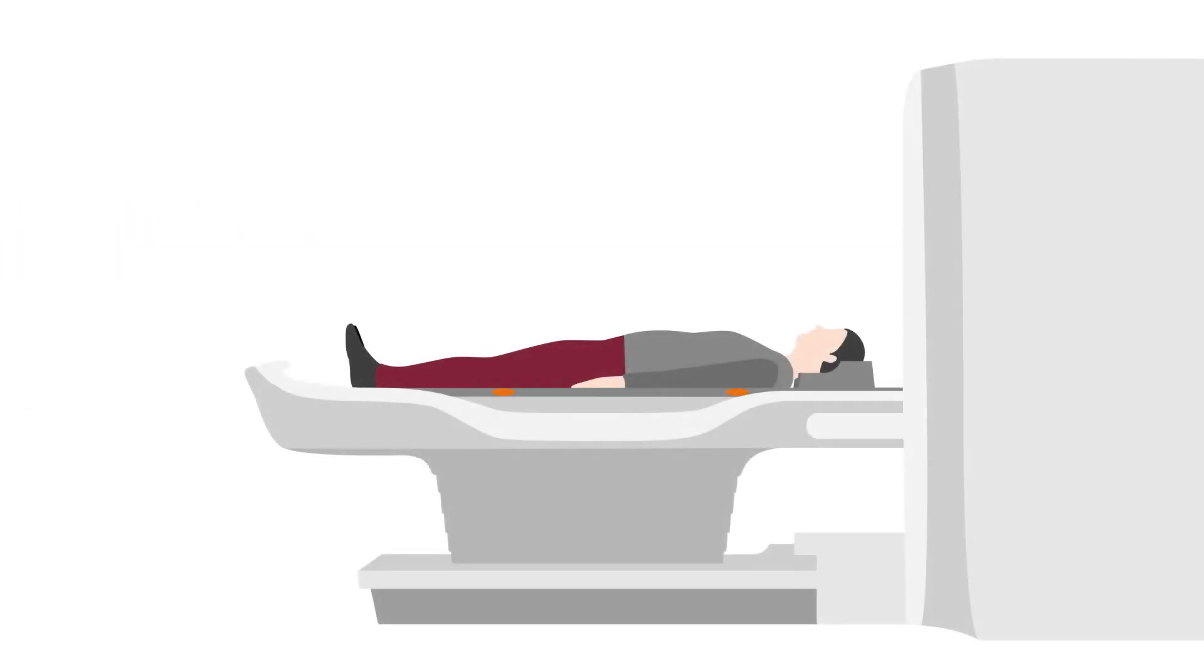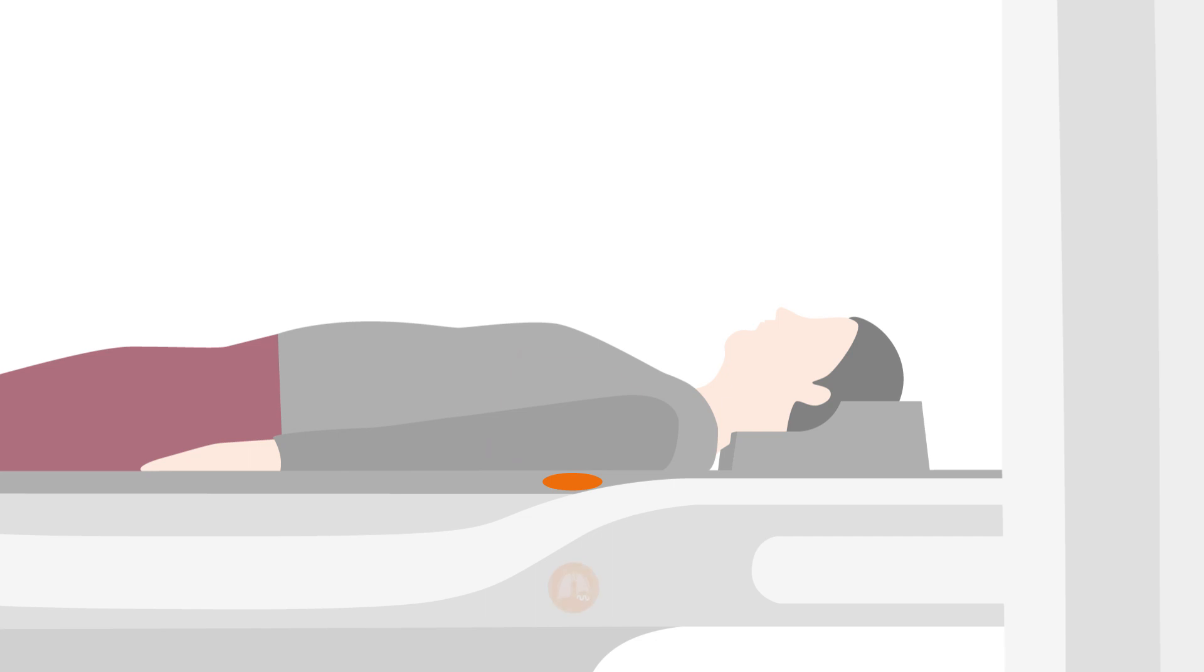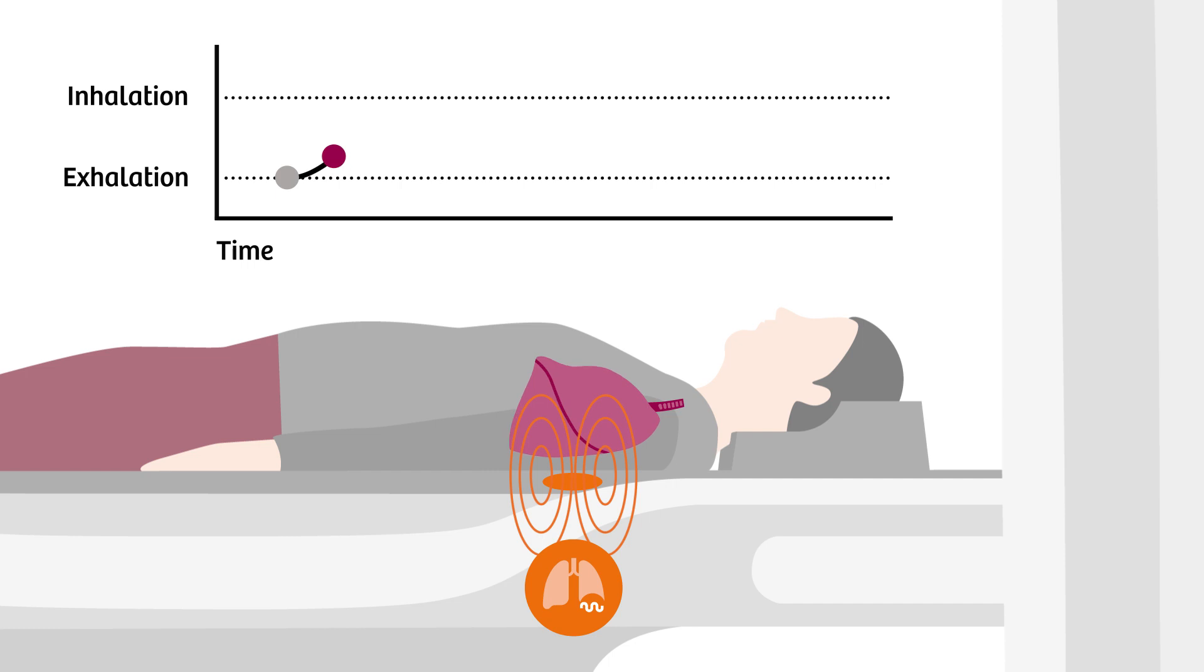Two respiratory sensors are embedded in the spine coil, one for headfirst and one for feet first exams. The sensors produce a local magnetic field that is affected by moving tissue from the changes of the lung volume.